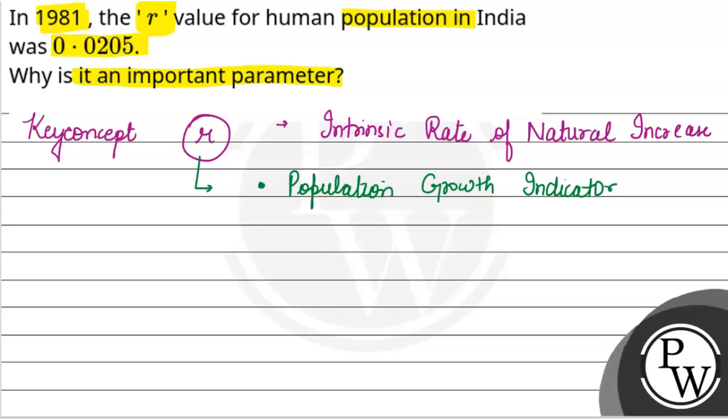The r value, we will denote it from small r. The r value tells us whether the population is increasing, or it is stable, or it is decreasing.